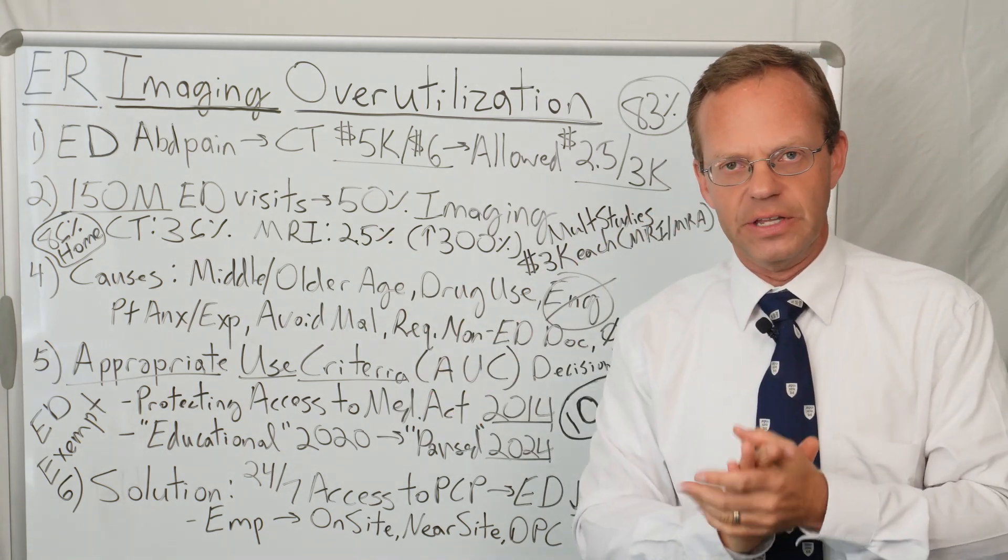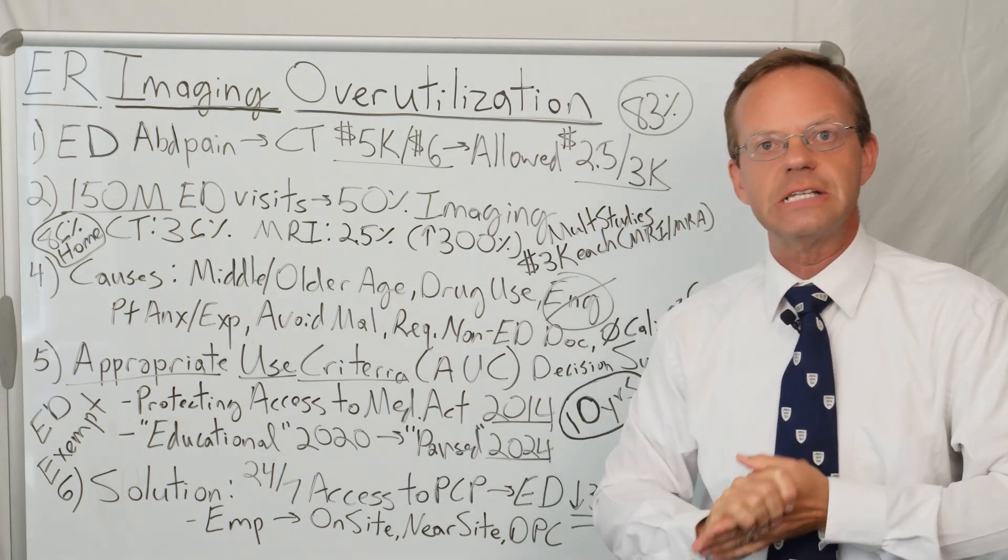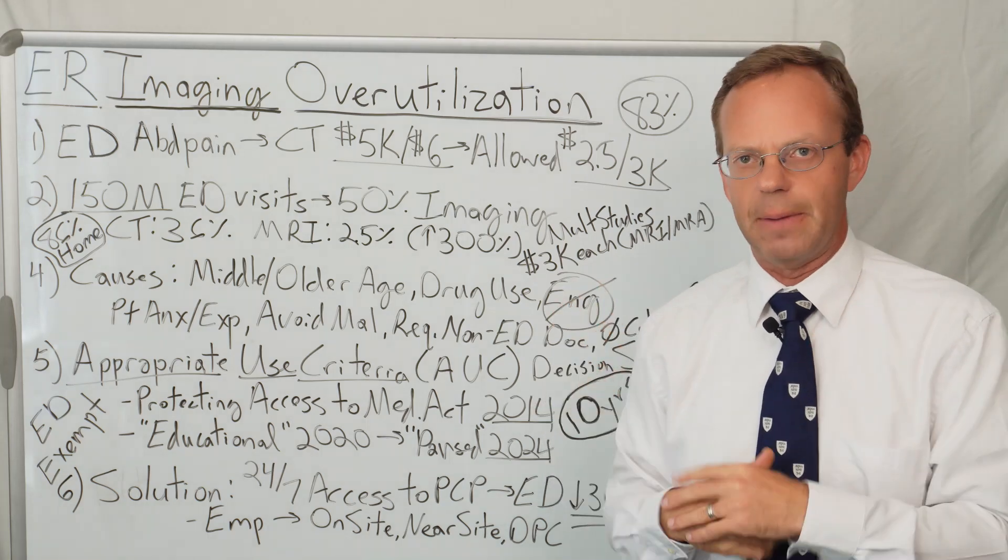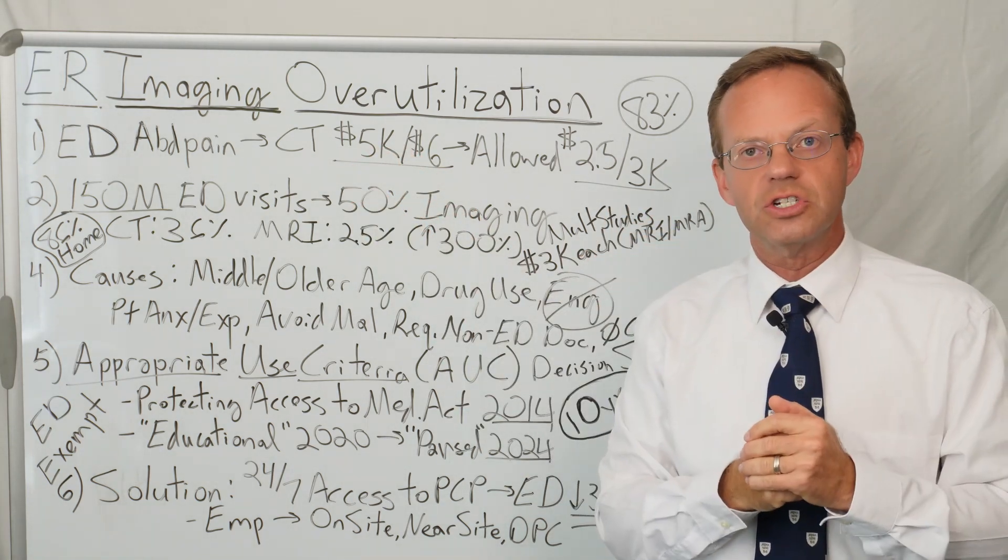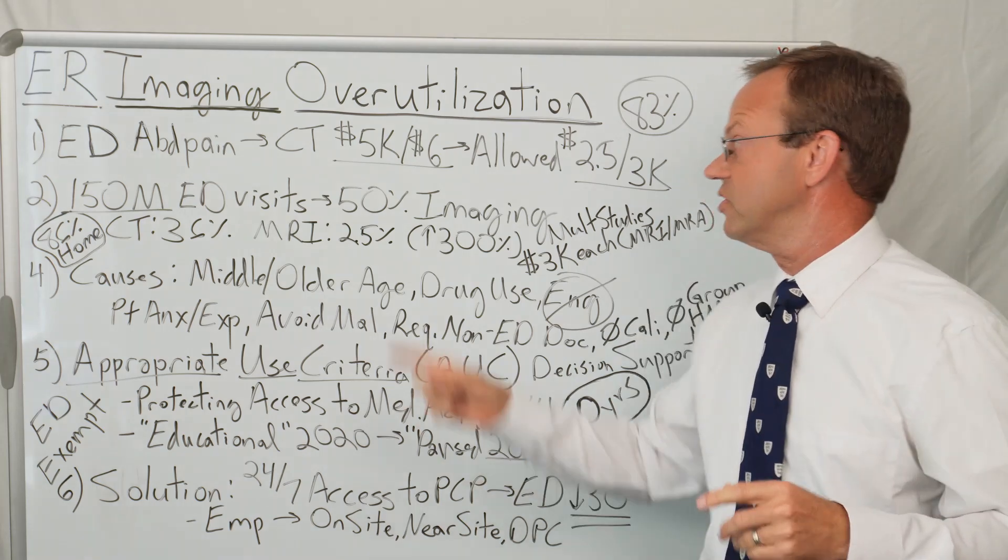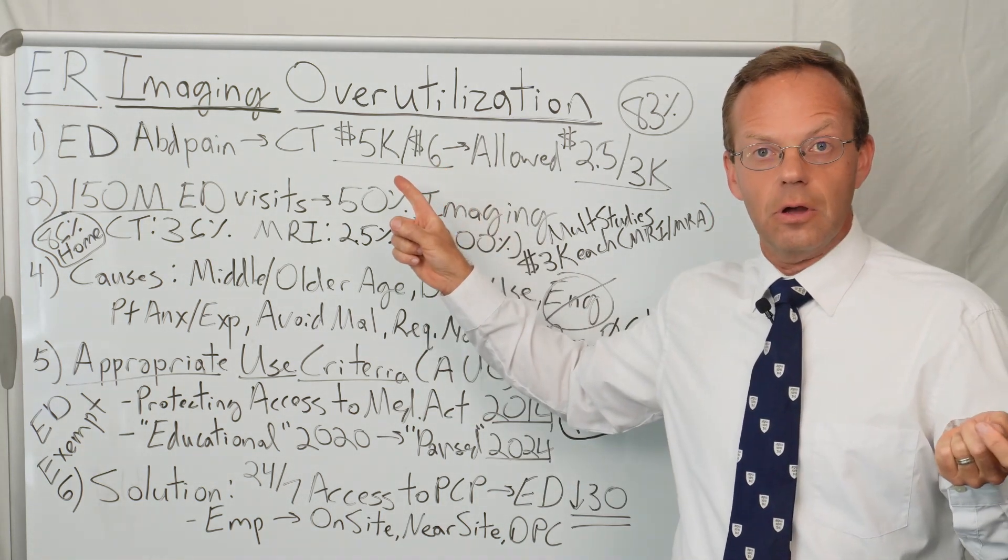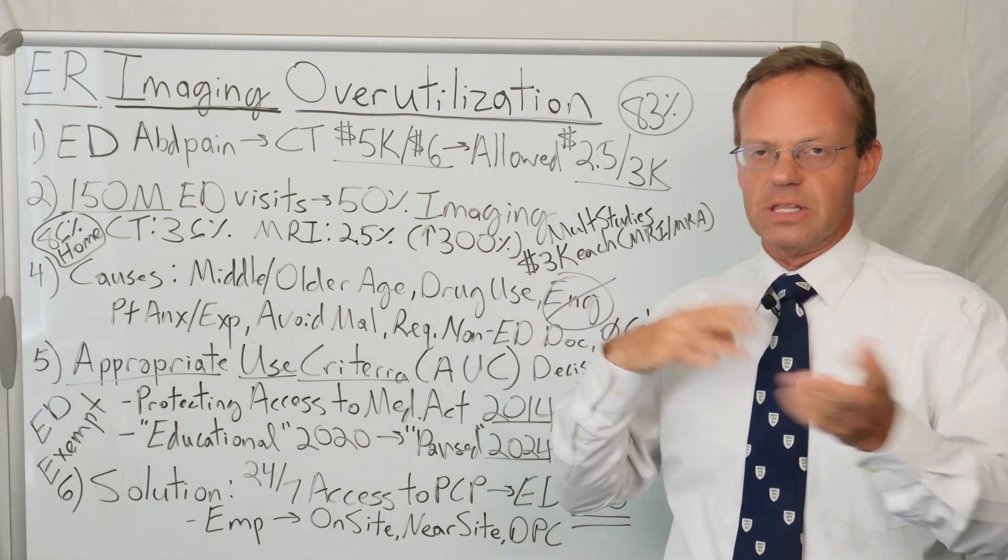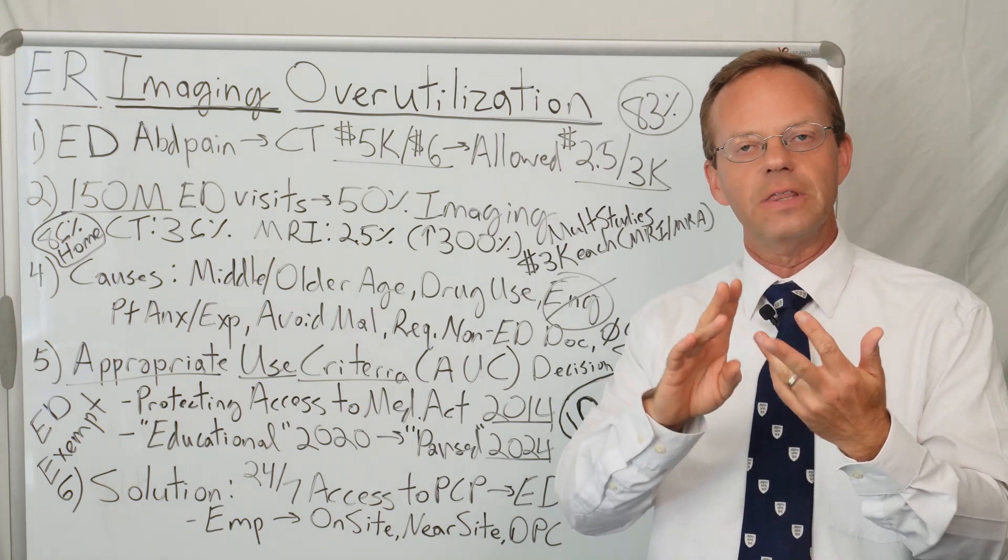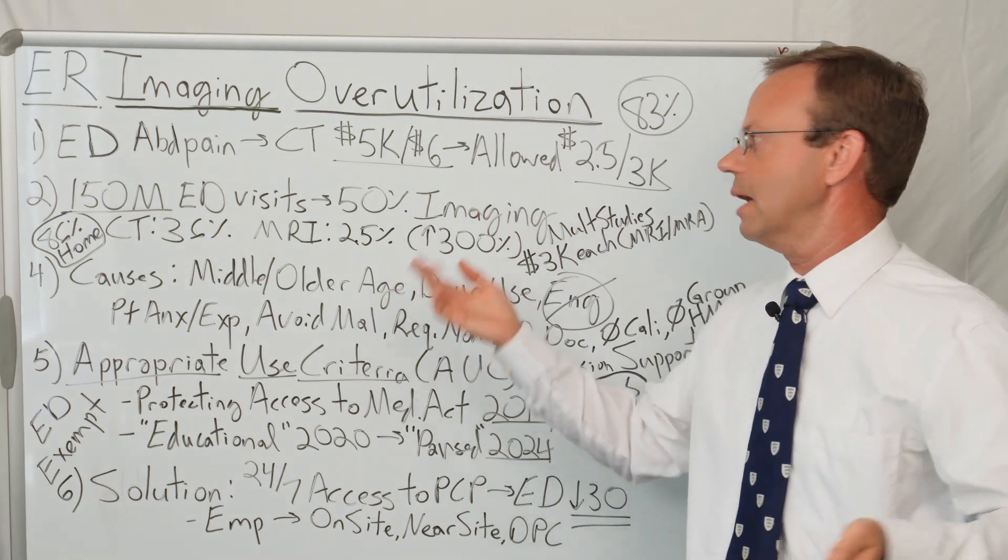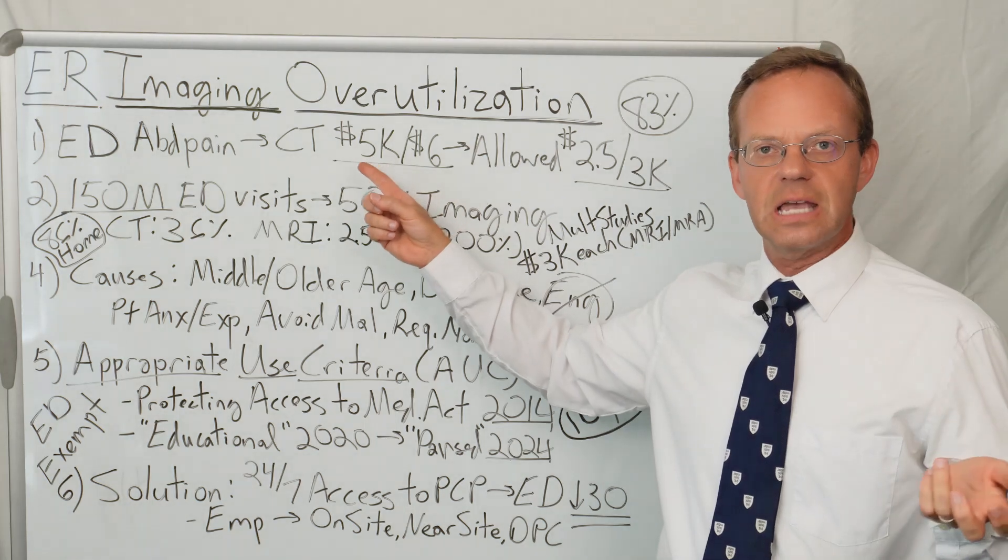Fast forward, I ended up getting the bill on the EOB for that ER visit and it turns out the billed charges for that CT scan of my abdomen and pelvis was $5,000 and the total billed charges for the ER visit was $6,000. So there was $1,000 for the ER doctor seeing me, the actual ER facility, the medications and labs, and then the CT scan was $5,000.